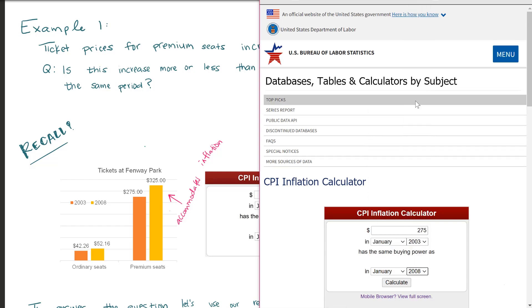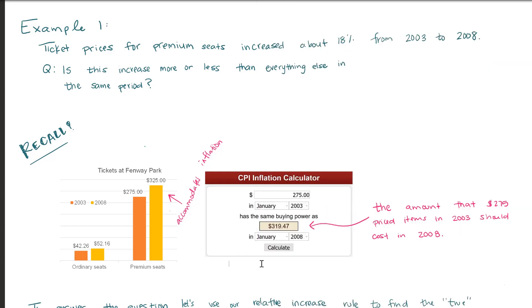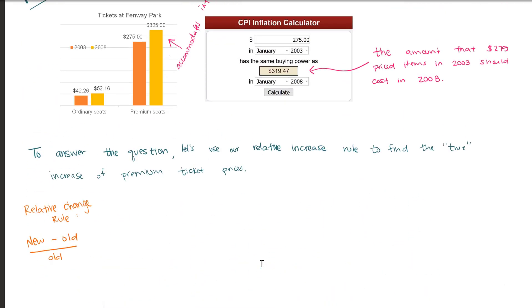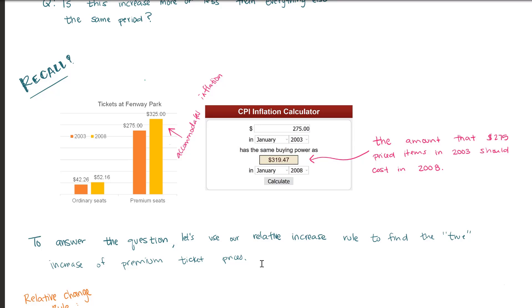In this box, you're going to put the old value, so the price for the premium seats in 2003. And we want to change the year. Now, here, what this calculator does is it'll tell us the worth of $275 from 2003 in 2008. And that is how we're getting this $319.47. So if an item was worth $275 in 2003, in 2008, it should be worth about $319.47.